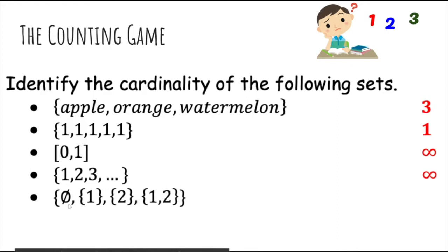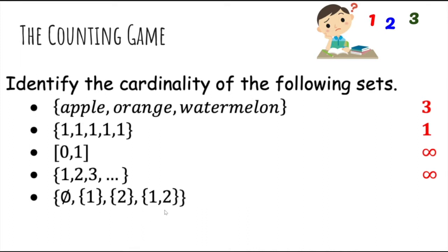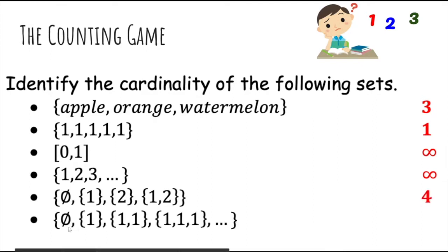What about this set? It actually does contain four unique items: the empty set, the set containing one, the set containing two, and the set containing one and two. These are all different objects, so this set has cardinality four. What about this one? It seems to have a lot of sets, but if you look carefully, the sets containing one are all the same set. We ignore duplicates, so there are only two unique items: the empty set and the set containing one — two elements.